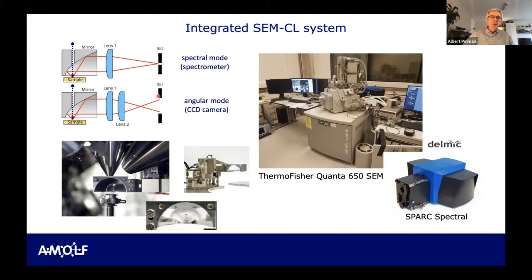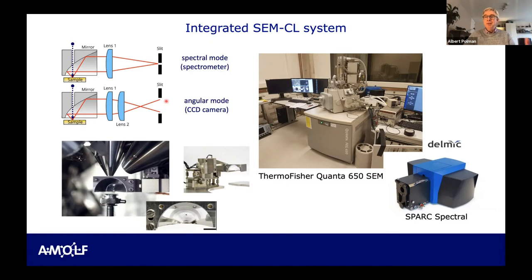Another innovation we added is angle-resolved CL measurements. If light comes out under a certain angle in this optics geometry, it projects at a certain pixel on the camera. Every pixel has a unique relation with some angle of the emitted light. So an image taken on the CCD camera directly is a radiation angular distribution — and as I'll show you later, that also means an optical band structure distribution. This is how we started; we developed the stage and all the optics to collect and do these measurements.